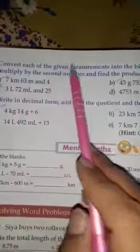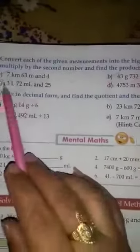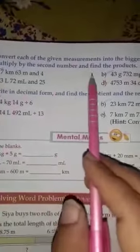Third part is convert each of the given measurements into the bigger units. Then, multiply by the second numbers and find the products. Product means multiply.